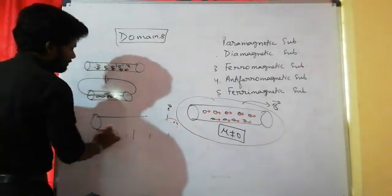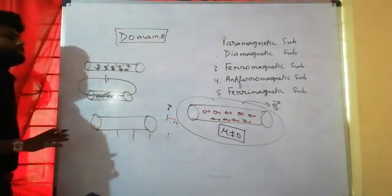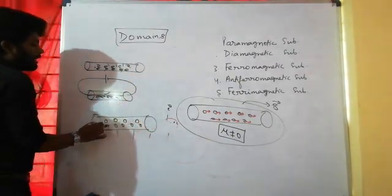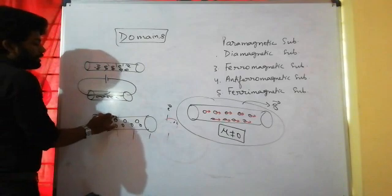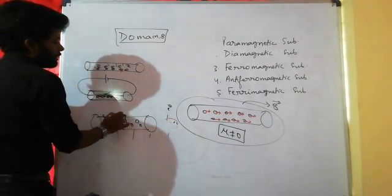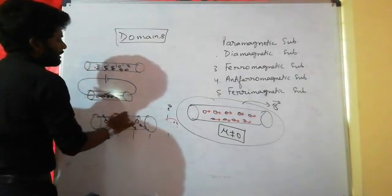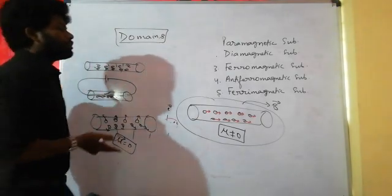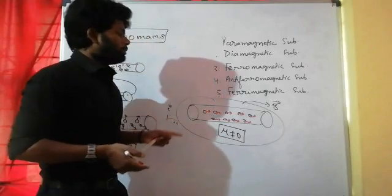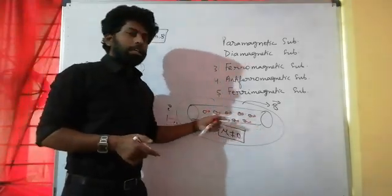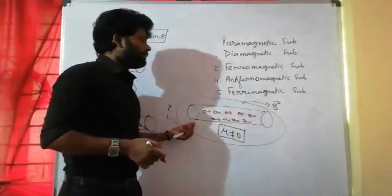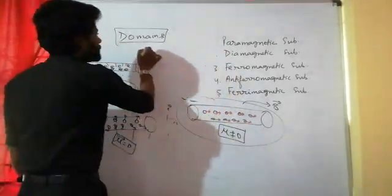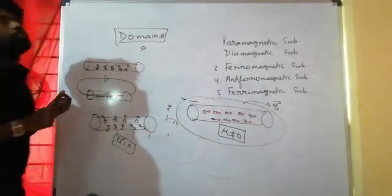So, in the absence of a magnetic field, domains are randomly oriented and the net magnetic moment is equal to zero. But in the presence of a magnetic field, all domains are oriented in the same direction — in the direction of the magnetic field. This is the concept of domains in solid state.